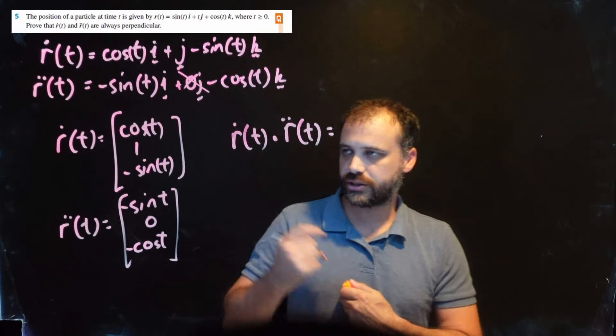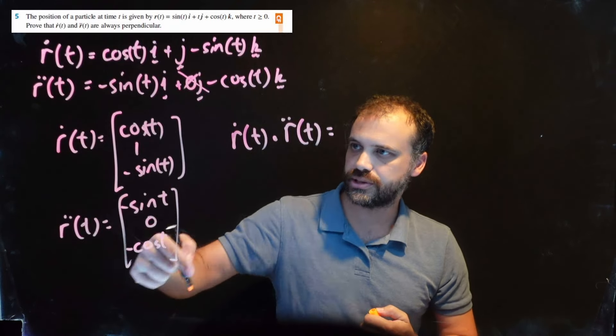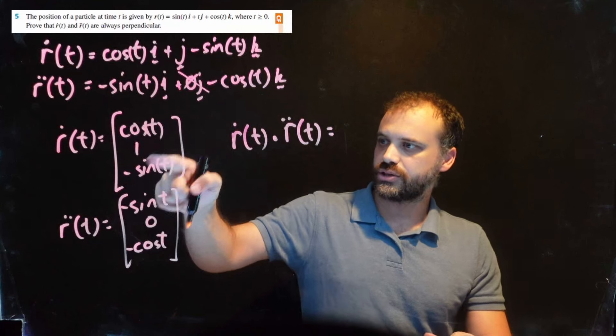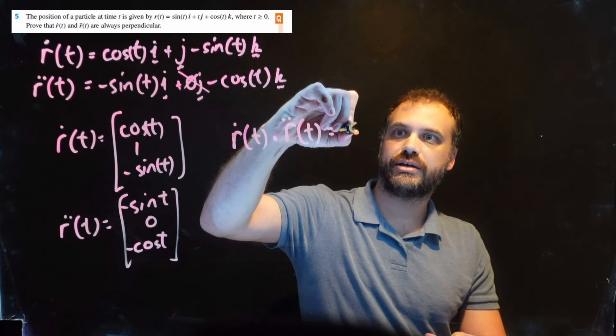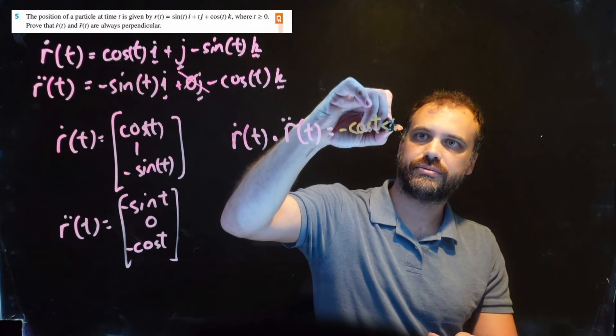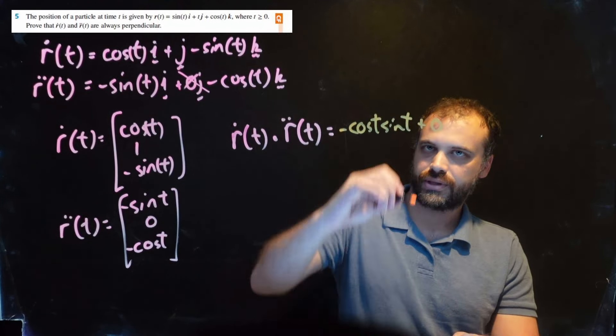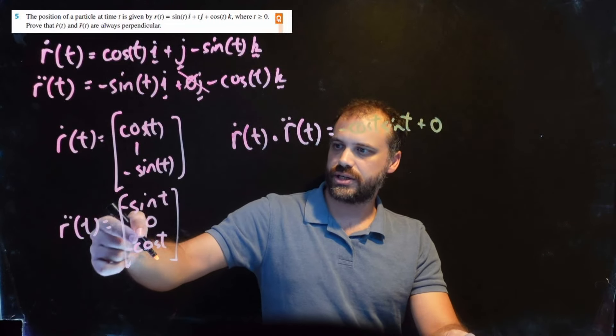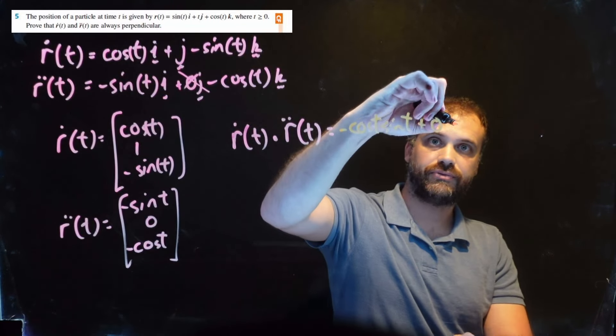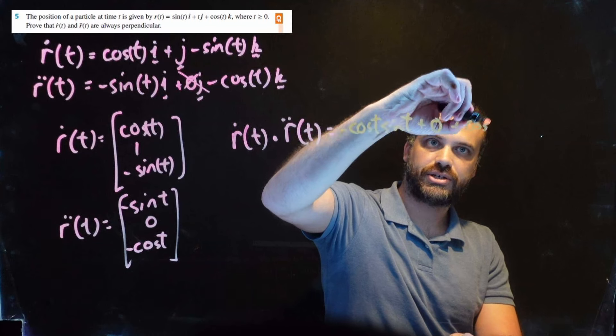Remember to find the dot product, you multiply the i components, the j components, and the k components. We get cos(t) times negative sin(t), so that's negative cos(t)sin(t). We do 1 times 0, which is 0. And we do negative sin(t) times negative cos(t), which is positive cos(t)sin(t).